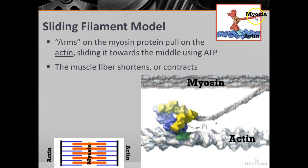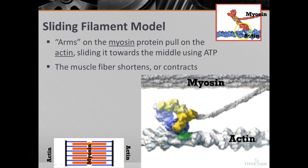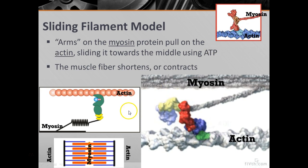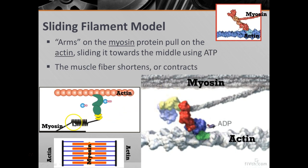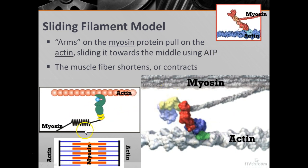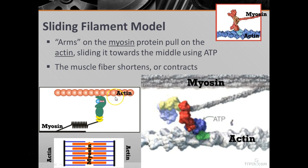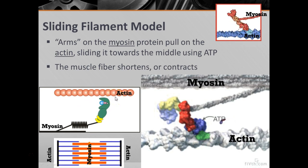Here you can see that the myosin doesn't move — the actin is the part that moves. So again in this example: myosin, the thick red one, is not moving; the actin is the one that is actually moving.